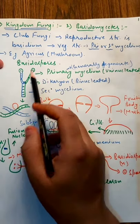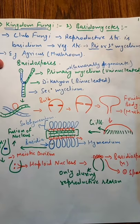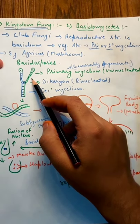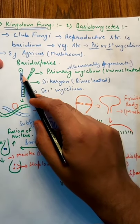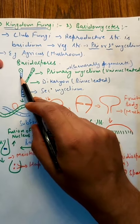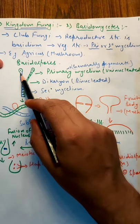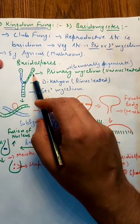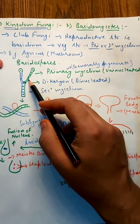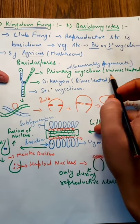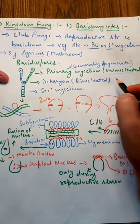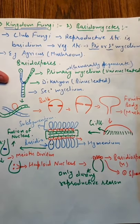So in Basidiomycetes, this is the primary mycelium. Consider that this is the first individual Agaricus or the mycelium. This is the primary mycelium and this is another primary mycelium. So it will start growing. This is the primary mycelium, and these are uninucleated.